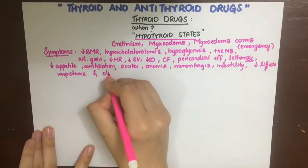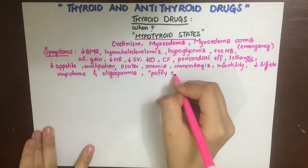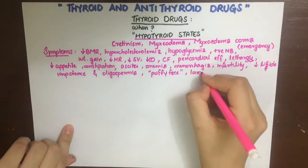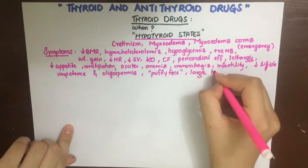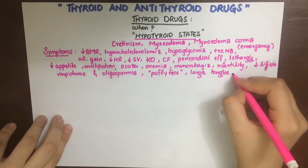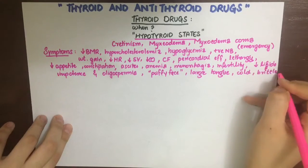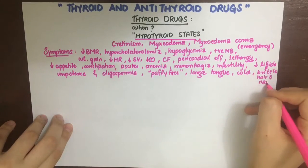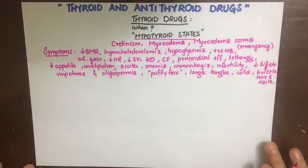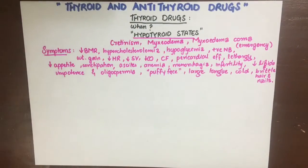Additional symptoms include infertility, decreased libido, impotence, oligospermia, puffy face, large tongue, pale dry skin, intolerance to cold, and brittle hair and nails. You don't have to remember this whole list of symptoms — you can imagine them by thinking about decreased metabolism in every system of the body.